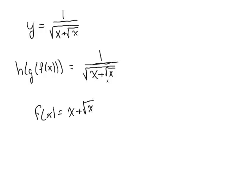What's happening to that x plus square root of x? Well, it's being square rooted. So g is what's making that happen. So g of x is going to be square root of x.